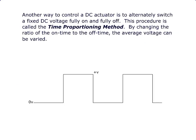Another way to control a DC actuator is to alternately switch a fixed DC voltage fully on and fully off. This procedure is called the Time Proportioning Method. By changing the ratio of the on time to the off time, the average voltage can be varied.